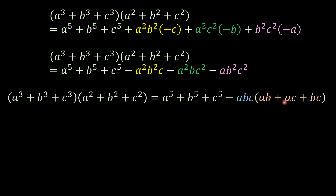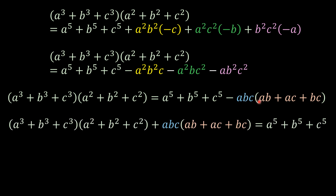So now we're getting something really interesting. So now what I'm going to do is I'm going to send this one to the left side, and then we have this one. So we already have a to the 5 plus b to the 5 equals to something.